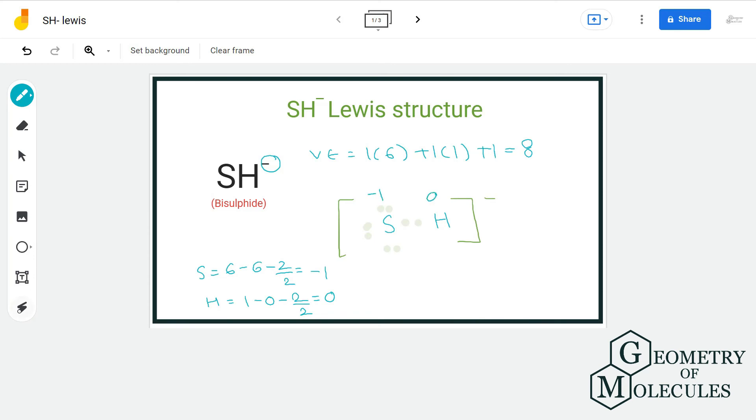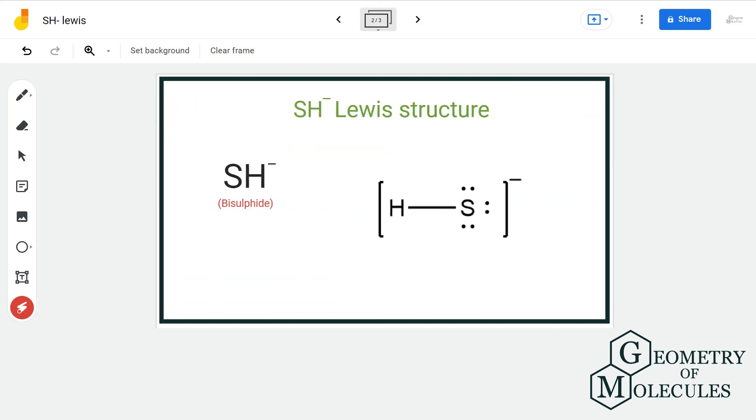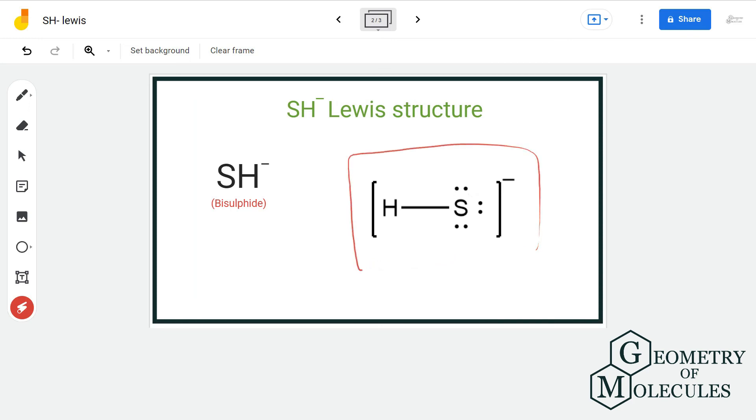Thus, the total formal charge on SH⁻ is minus one, which is equal to the overall charge of the ion. So this is the final Lewis structure of SH⁻ ion.